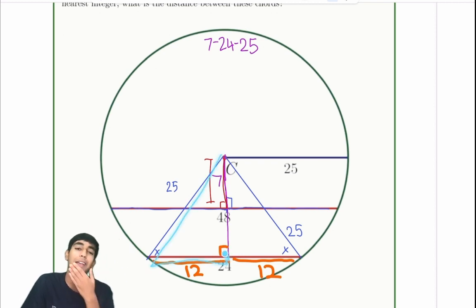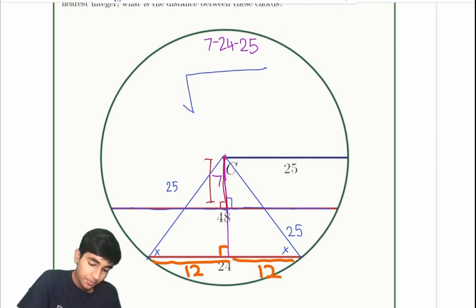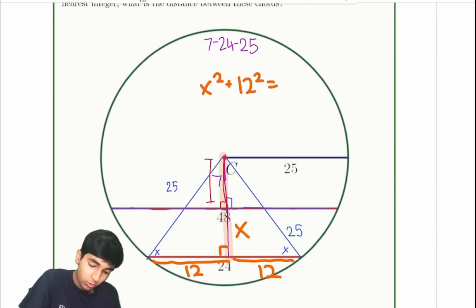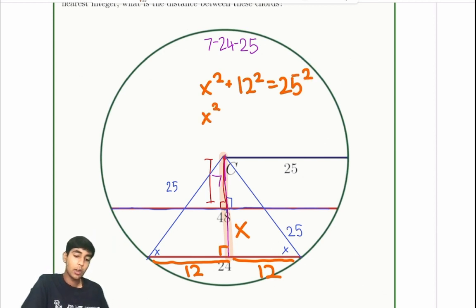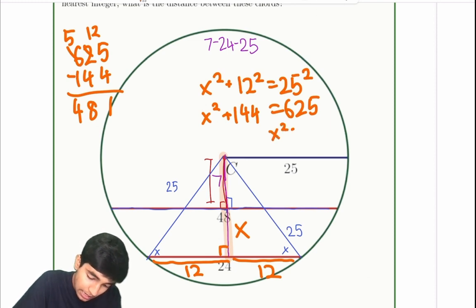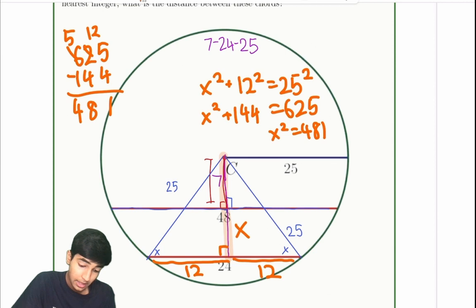Ah, sadly, that's not a Pythagorean triple. There's no Pythagorean triples 12, 25. You can check. But don't worry, you can still use the Pythagorean theorem. It's just a little bit slower. So let's call this distance x. So we have x squared plus 12 squared equals 25 squared, Pythagorean theorem. x squared plus 144 equals 625. So 625 minus 144. We just do the subtraction for 481. So x squared equals 481.